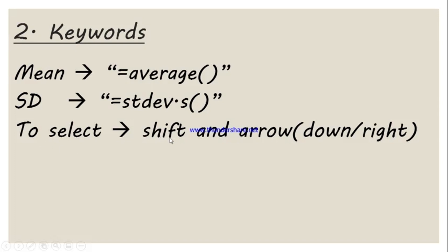To select the data, we are going to use the Shift and arrow buttons. If we are selecting vertical data downward, we press and hold Shift and the down arrow. If we are selecting data from left to right, we press and hold Shift and the right arrow.